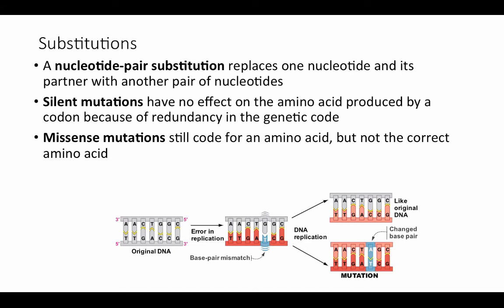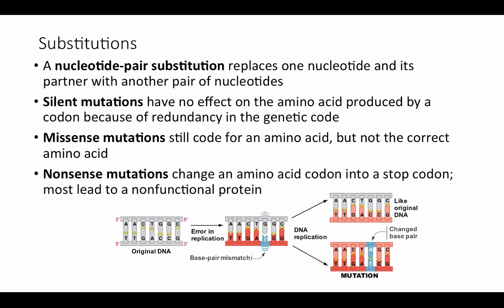A missense mutation still codes for an amino acid, but it will be a different amino acid than the original coding sequence — an incorrect amino acid. A nonsense mutation changes an amino acid codon into a stop codon, stopping translation of the protein prematurely and leading to just a partial polypeptide that is almost certainly not going to function correctly.